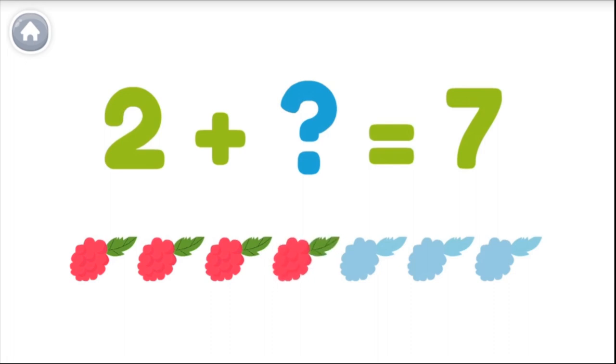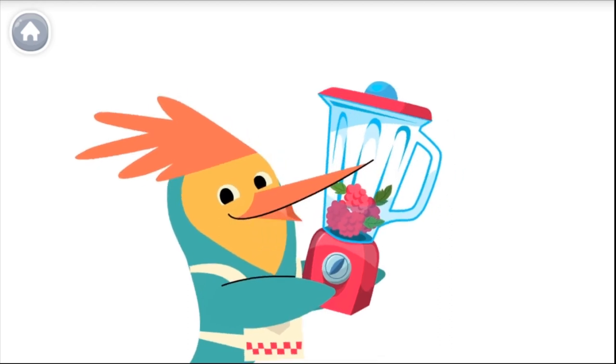Let's count. One, two, three, four, five. Two plus five equals seven berries. Mmm, time to make a smoothie.